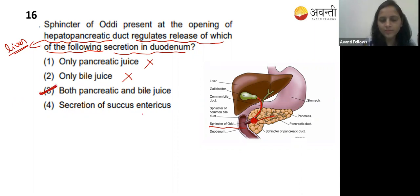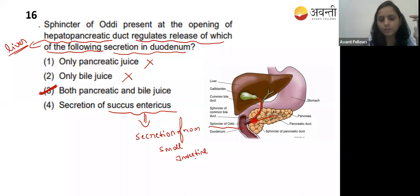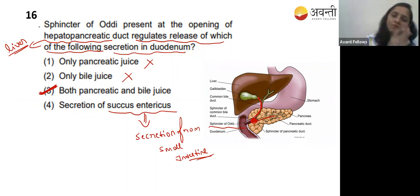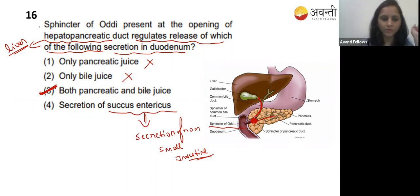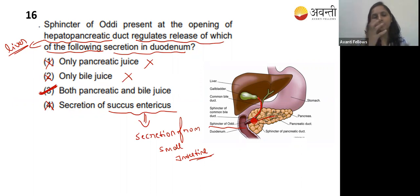Sucus entericus is the secretion from the small intestine - it secretes peptidase enzymes helpful for digestion of proteins. That is not the correct answer here. The correct answer is that the sphincter of Oddi regulates juice from both the gallbladder and the pancreas entering the duodenum.